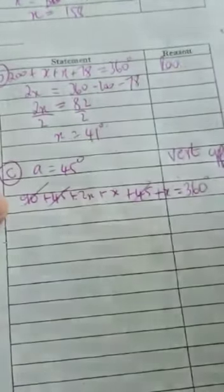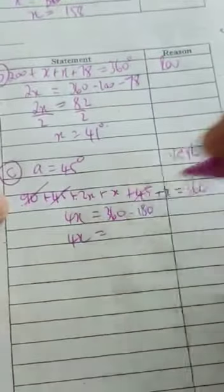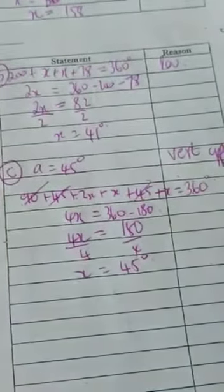So x plus 45 plus 40, that's going to give you 180. To get over, becomes 360 minus 180. 2x plus x is 3x plus x is 4x. So we have 4x is equal to 180 degrees. Divide it by 4 both sides. So x is equal to 45 degrees.